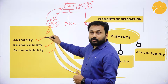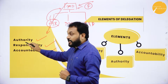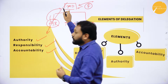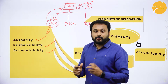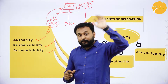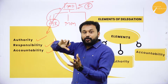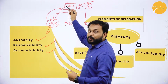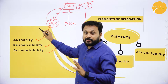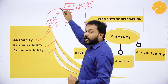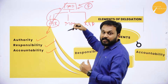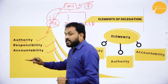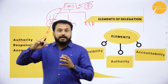Authority flows downward. The HR manager, now acting MD, gets the authority — the right to command. The Marketing manager and R&D team must now listen to him. That is what authority means: the right to command others based on your position.